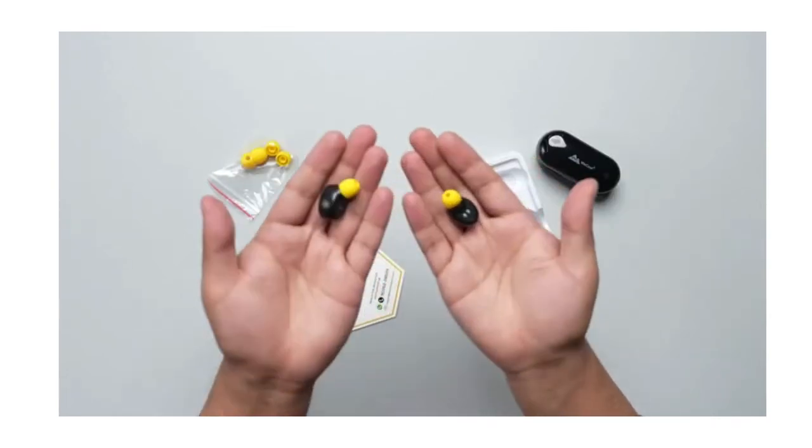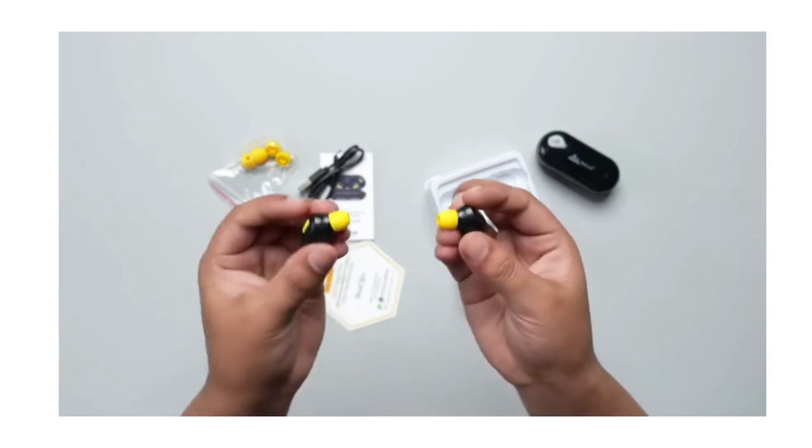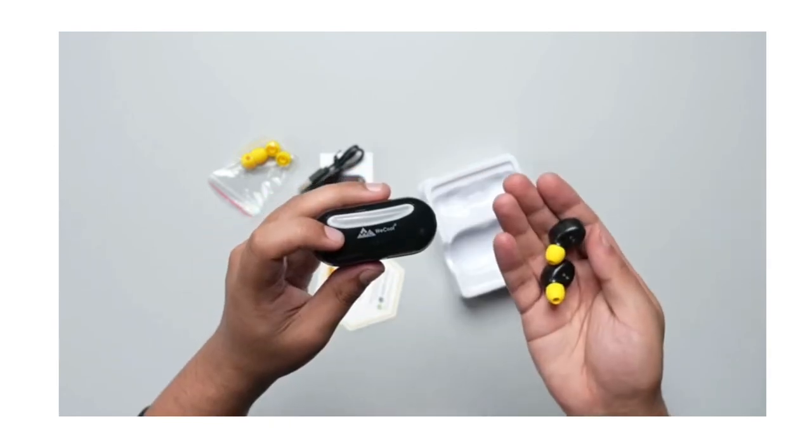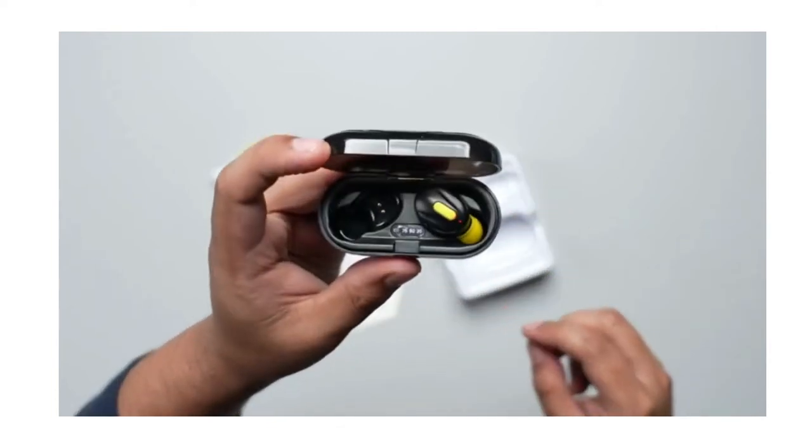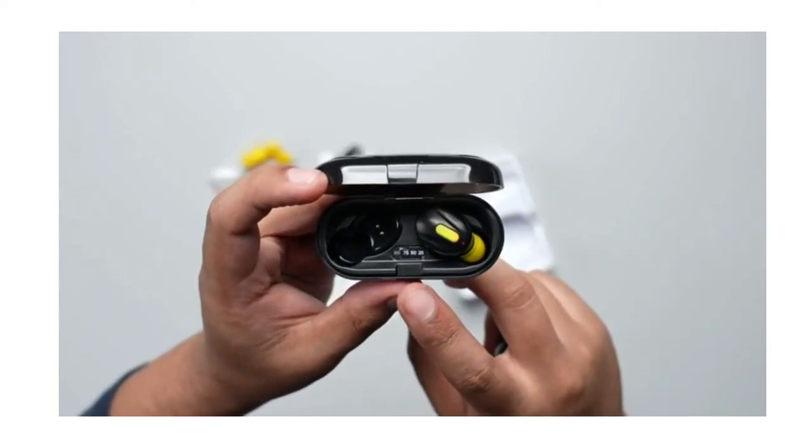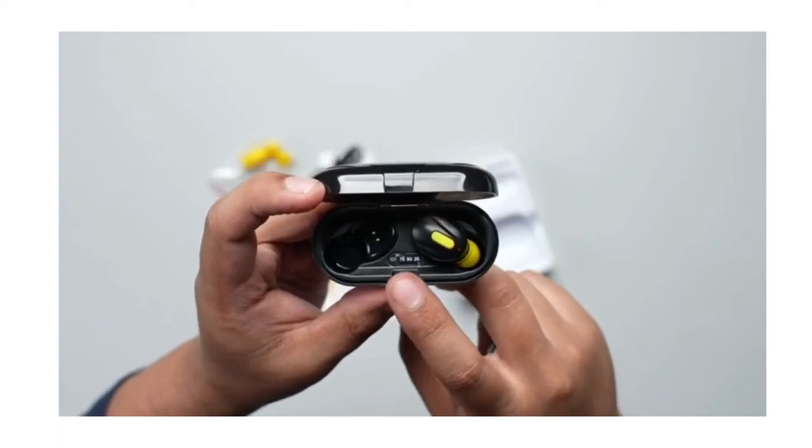Then we have the earbuds. As you can see they come in a black and yellow tone. As soon as you pop these earphones inside the charging case, the battery percentage is going to appear which tells you how much battery is still left.